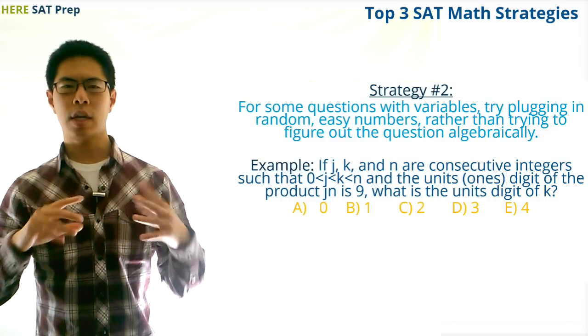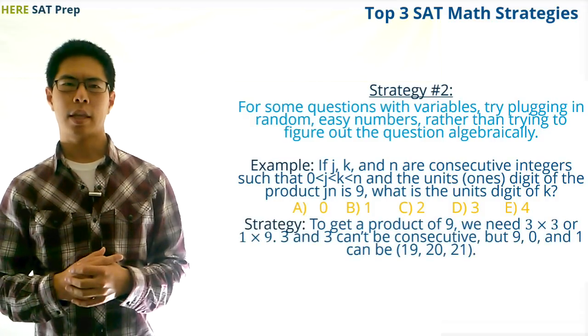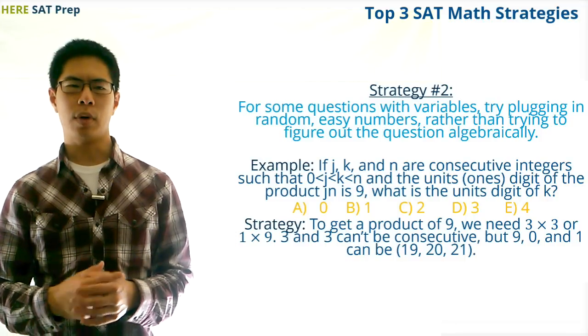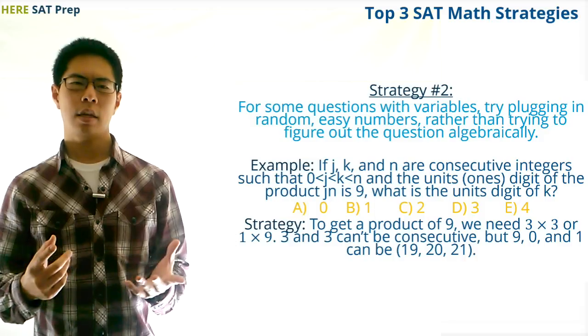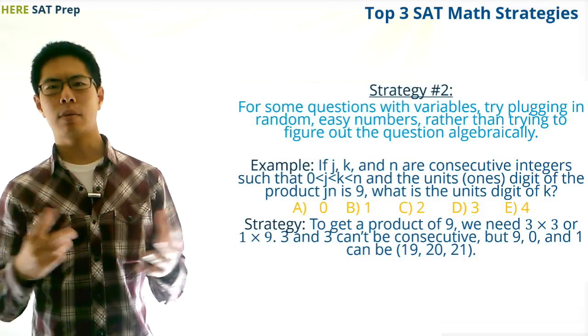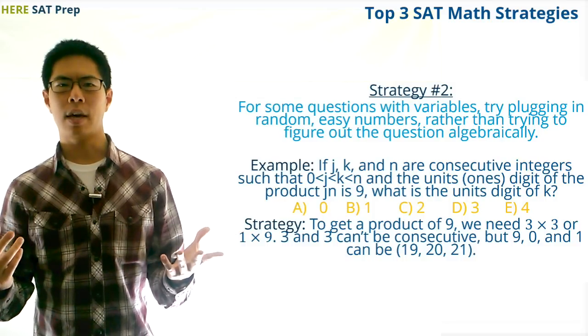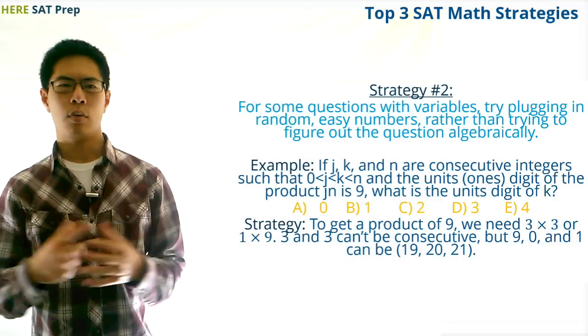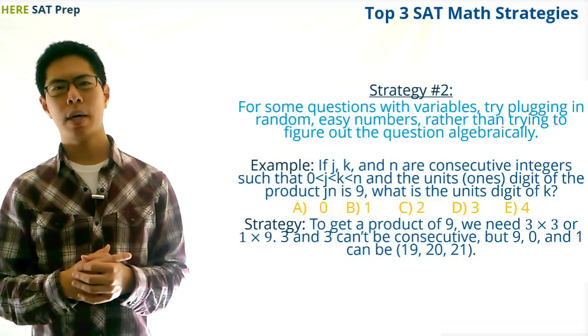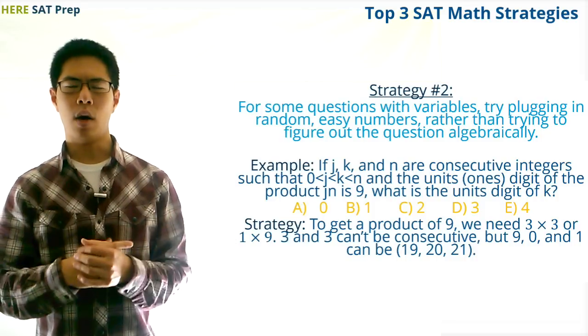Next, we need to find out the constraints and what the question is asking for. We see in this problem that the constraint is that j times n, or the first number times the third number, needs to end up with a 9 in the ones place. Then, we would figure out that to get a 9 in the ones place, we would need to either do 3 times 3 or 9 times 1. We then recognize that we can't get 3 times 3, or 3 and 3, with three consecutive numbers, so our only option is 9 and 1, which might seem strange at first, but then we realize that we can have 9, 0, and 1.